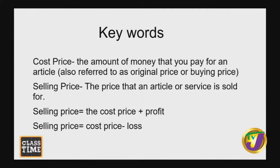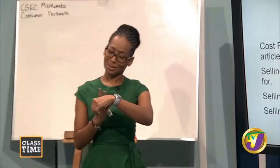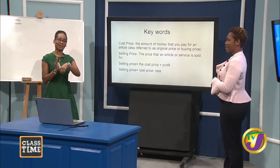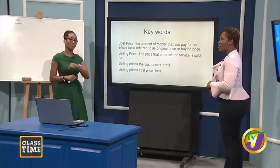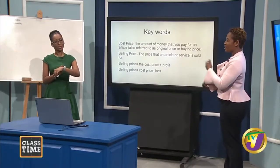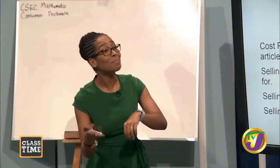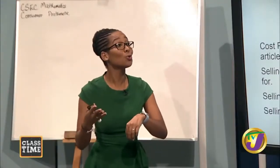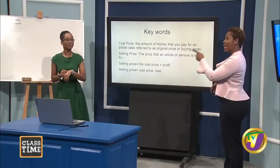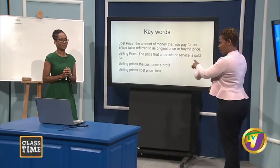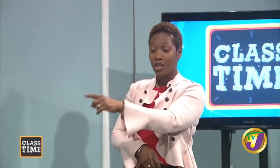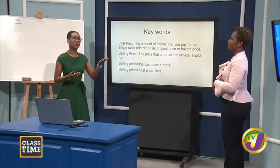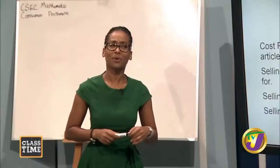Let's be a little more practical. Say you bought that watch for $500 USD and you sold it for $300 — you're going to be at a loss. Your selling price would have been your cost price of $500 subtract how much money you lost, which would be $200. So that is how you get $300 as your selling price.